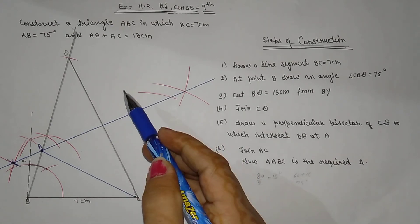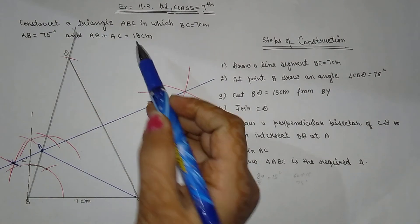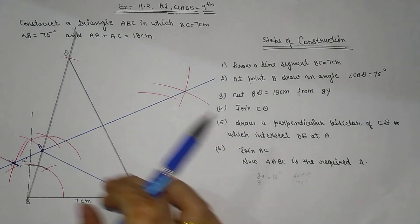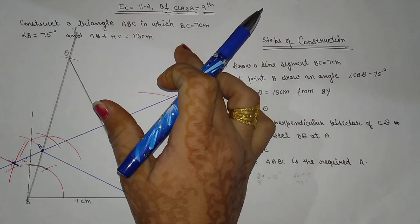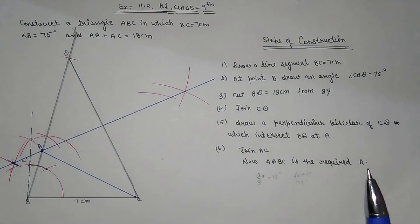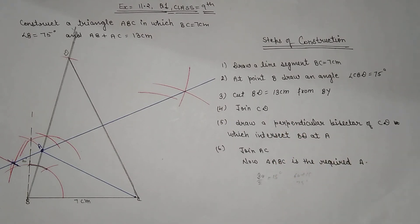This is the first type, where the sum of two sides is given. Whenever the sum is given, you will construct using this method. When the difference is given, that is type 2, which we will see next. The form of the figure changes accordingly.